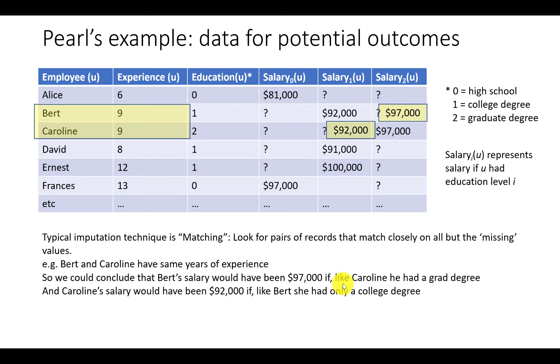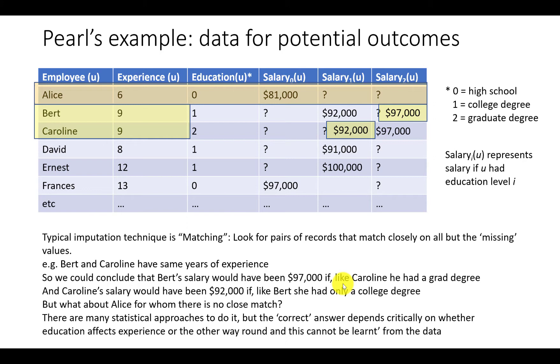But what about Alice for whom there's no close match? There are many statistical approaches to do it, but the correct answer depends critically on whether education affects experience or the other way around. And this cannot be learned from the data.